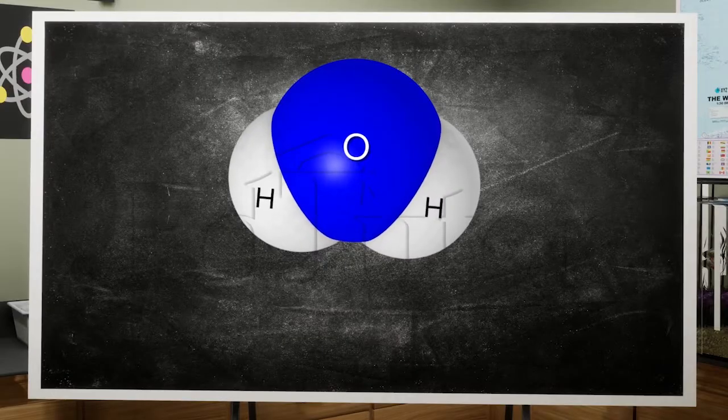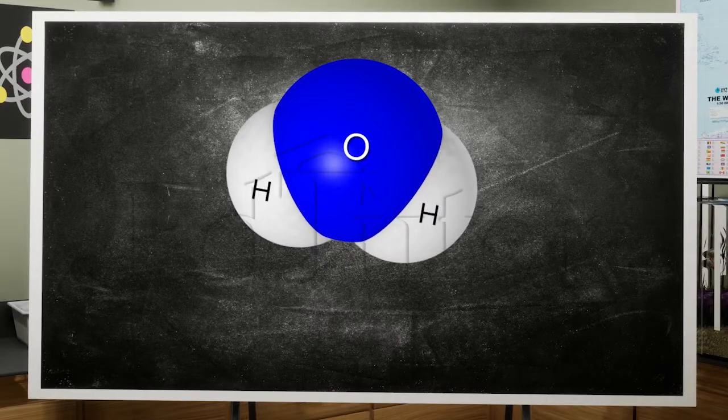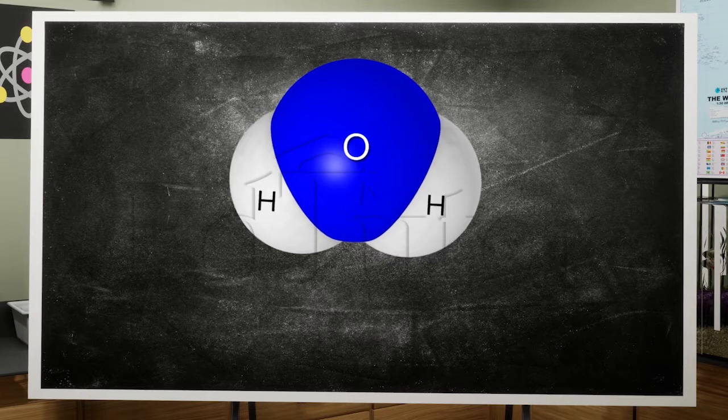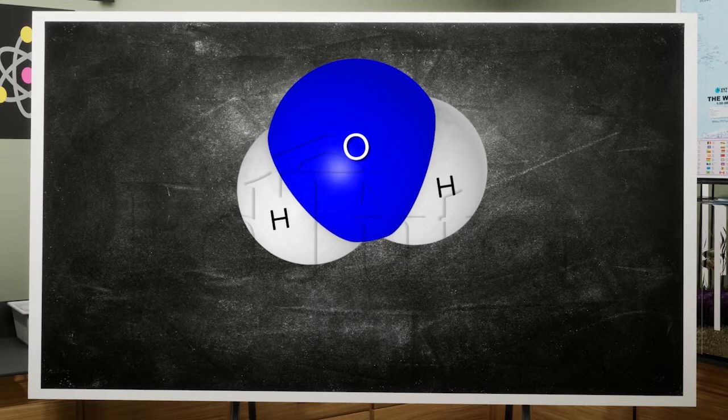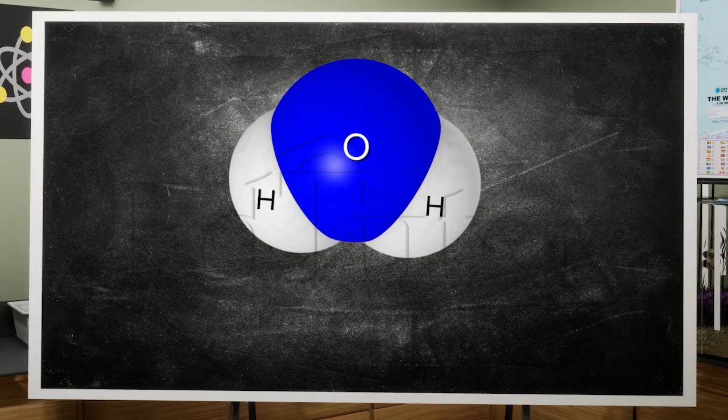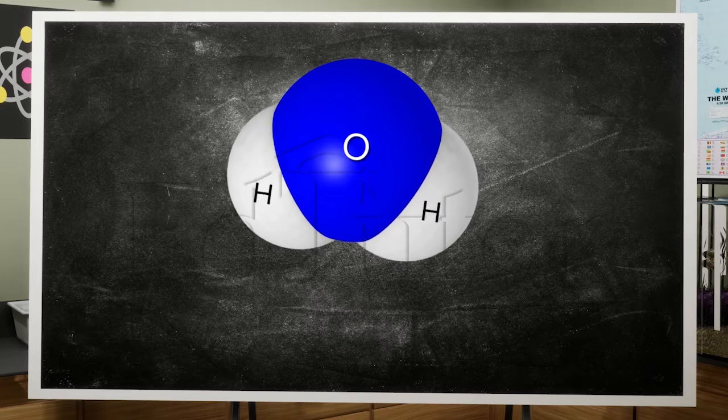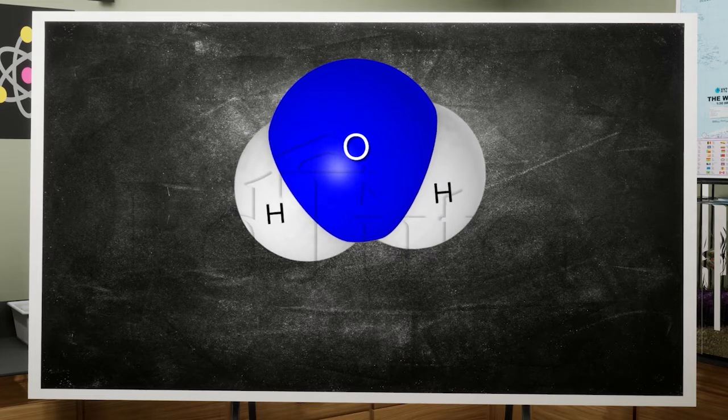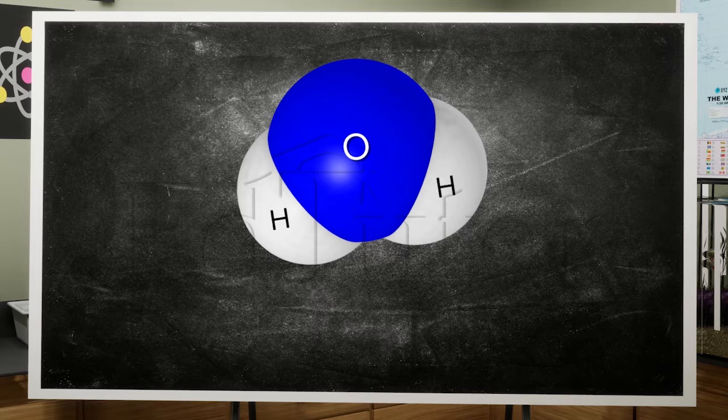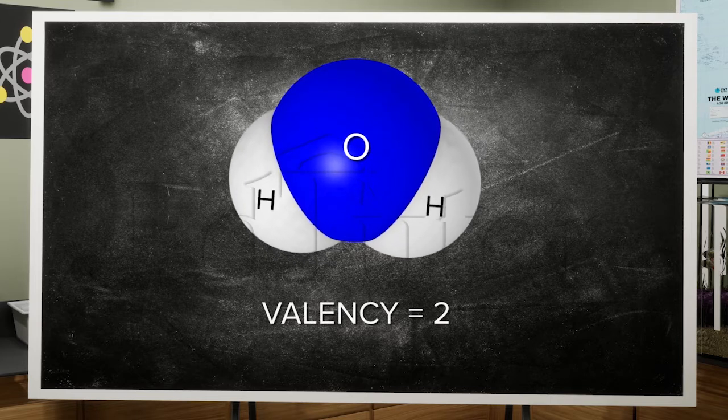Next example is of water, a familiar and unknown compound. If you observe, oxygen can be seen to form two bonds, or in fact two hydrogens are attached to one oxygen, hence oxygen's valency is two.